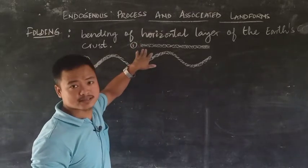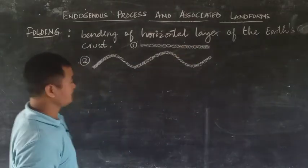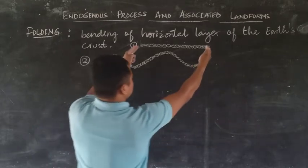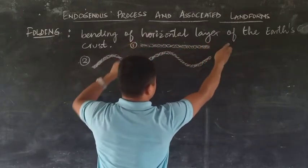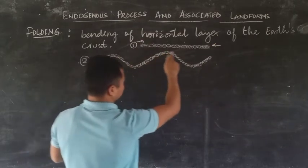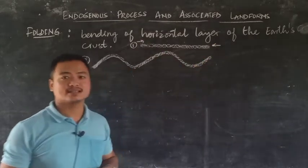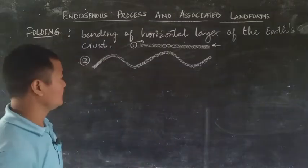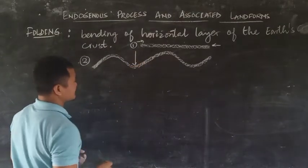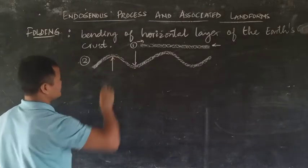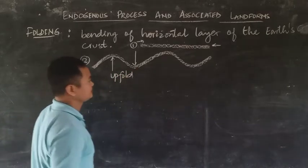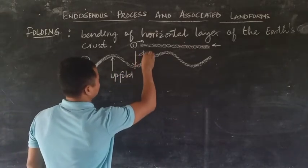Consider a straight line representing the crust. When force is applied from either side, the crust starts getting folded or bending. When it bends, we see one is a down fold and the other is an up fold.